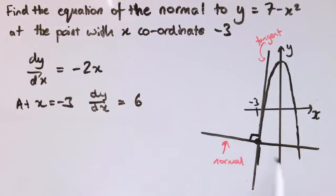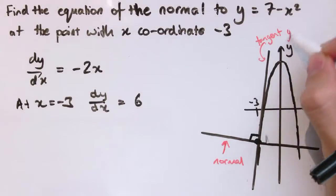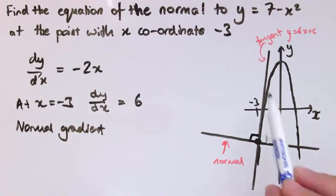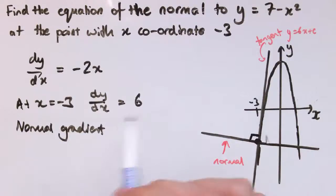So that's the gradient of the tangent. The normal is perpendicular to the tangent, so if the tangent has gradient 6, the normal has gradient which is the negative reciprocal of that. You know that a line which is perpendicular to another line, the gradient will be the negative reciprocal. So the normal gradient is minus 1 sixth.